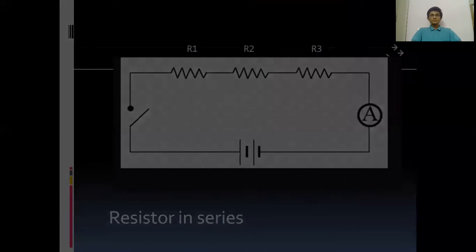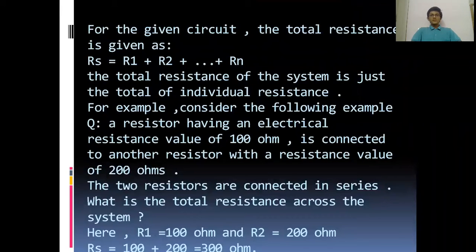For the given circuit, the total resistance is given as Rs = R1 + R2 + ... + Rn, where Rn is the number of resistors connected in series. The total resistance of the system is just the sum of individual resistances.